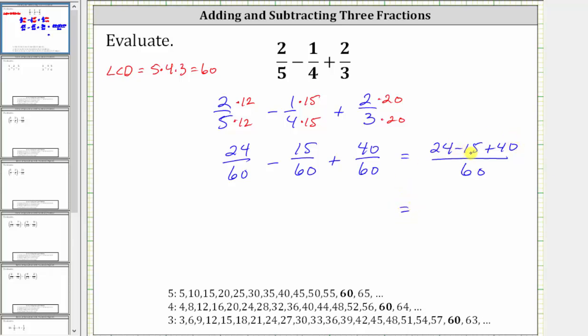24 minus 15 is nine. Nine plus 40 is 49, giving us 49 60ths.